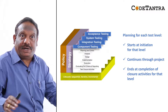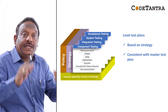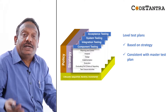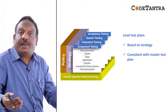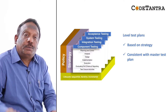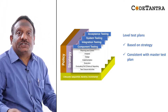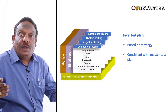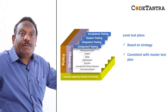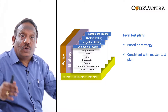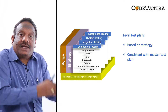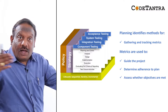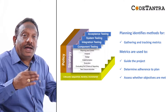Each level test plan — for example a component test plan, integration test plan, system test plan, or acceptance test plan — should be based on your test strategy. In large projects we may come up with a master test plan, and all level test plans should be consistent with that master test plan. Planning also identifies the methods for gathering and tracking metrics for every level.